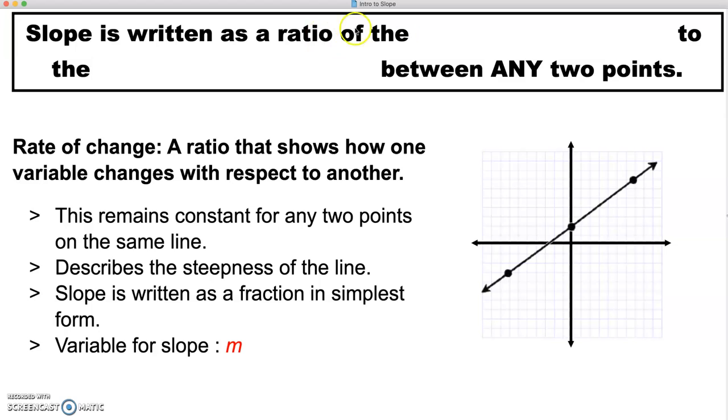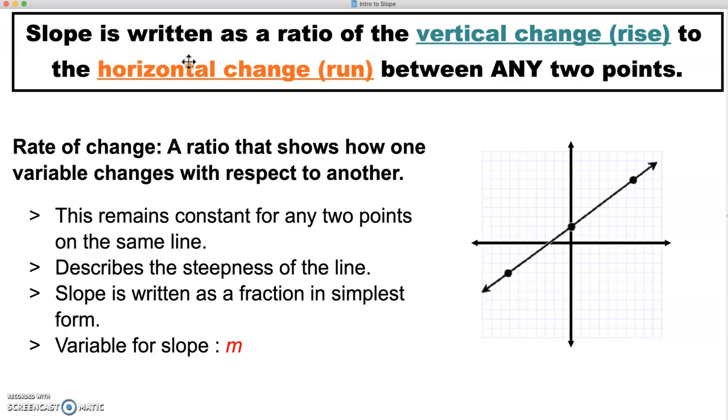Slope is written as a ratio of the vertical change, which we call the rise, to the horizontal change, which we call the run, between any two points.